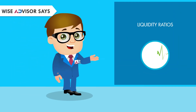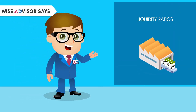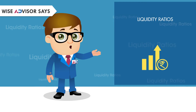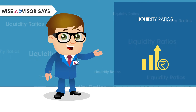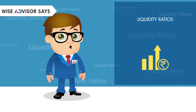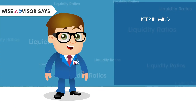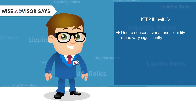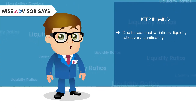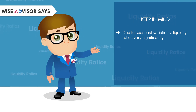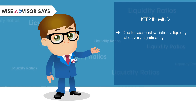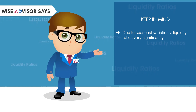The more volatile a company's business is, the higher the level of liquidity needed to cushion itself from business uncertainty. It is important to keep in mind that due to seasonal variations, liquidity ratios vary significantly over the period of the year, so it is important to note the time when liquidity is being looked at.